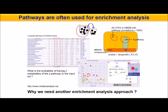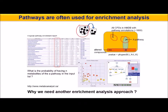MetaboAnalyst is one of the most utilized software tools for pathway enrichment analysis using a hypergeometric test. It uses a background database of almost 1,600 compounds with pathway annotation. The output is a table and a visual representation. The table includes pathway name, total number of compounds in that pathway, number of hits, p-value, negative log of that p-value, corrections for multiple hypothesis testing, and an impact score calculated using the topology of a pathway.